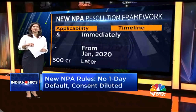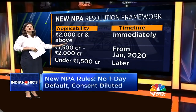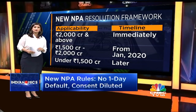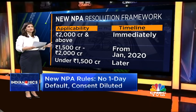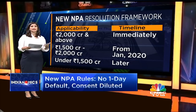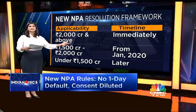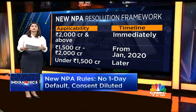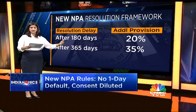The new circular is applicable to all borrowers with over 2,000 crore rupees exposure, which was also the case in the last circular. For accounts between 1,500 and 2,000 crores of exposure, the guidelines will kick in from January 1, 2020. For all accounts below 1,500 crore rupees, the RBI is yet to come out with guidelines. The additional provisioning stands at 20% for delays beyond 180 days, rising to 35% after 365 days.